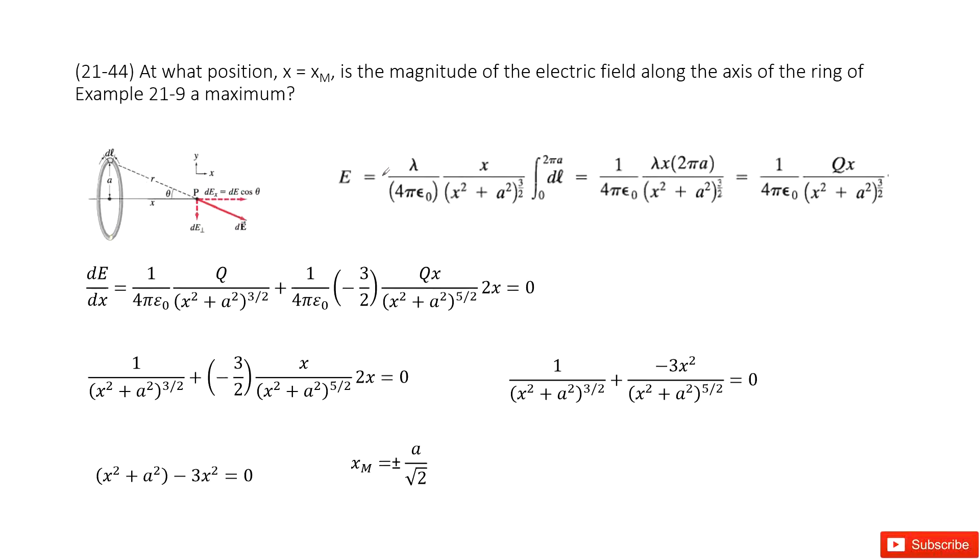So first we copy what we did in example 9. Example 9 is the charge ring, and then at the x-component, we find its electric field. And the equation looks like this one. If you're not familiar with it, you can go back to review your textbook example 9.